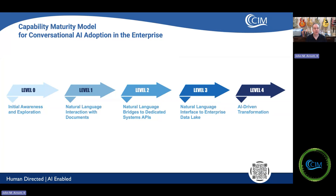Today, I'm going to take you through the Capability Maturity Model. This is a way to roll out and adopt natural language conversational AI in your enterprise. It goes from a level zero to a level four, and I'm going to walk through each of these with you.